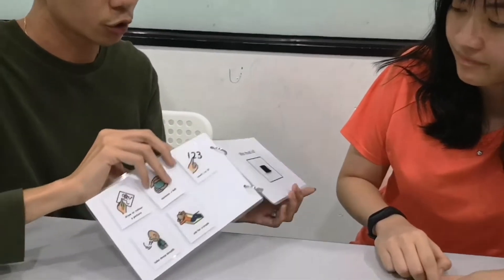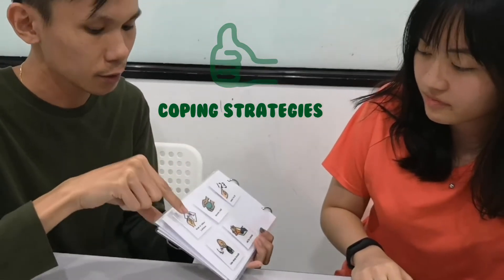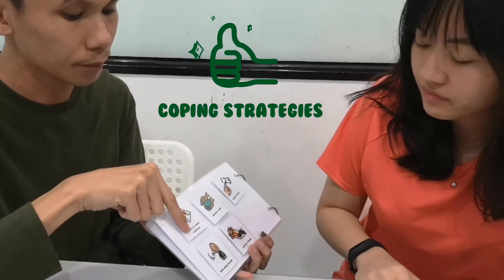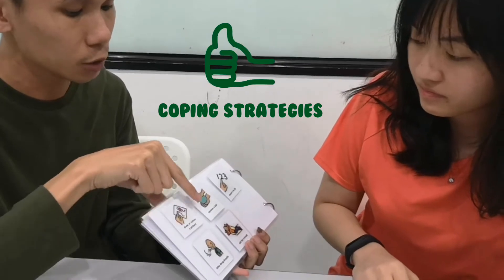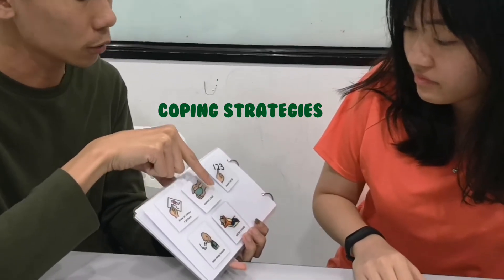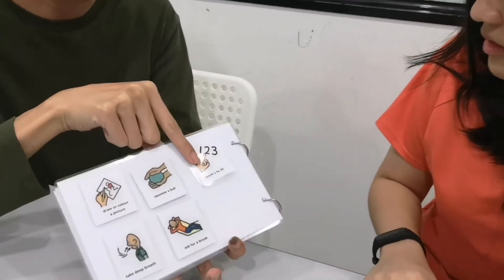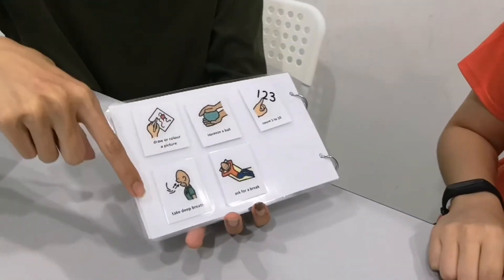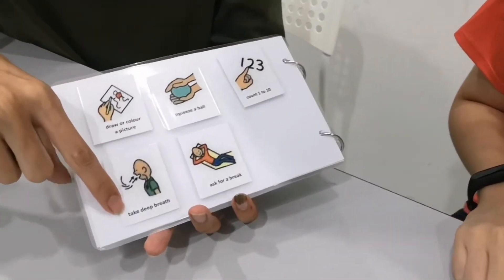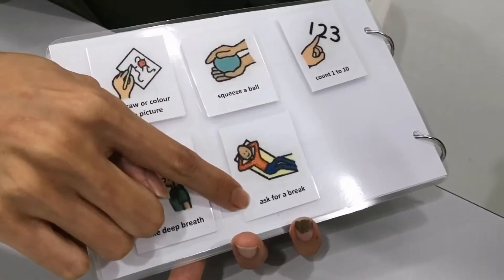Now, these are the few things you can do. You can draw a color picture, squeeze a ball, count 1 to 10, take a deep breath, or ask for a break.